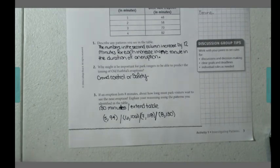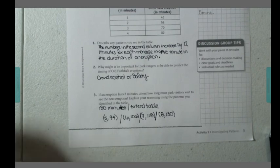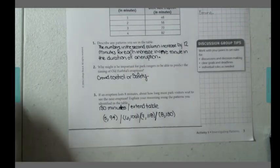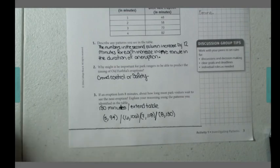I have now provided the answers for questions 1, 2, and 3. The first thing you would have done in question 1 is you and your table mates should have described the patterns that you saw in the table.